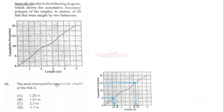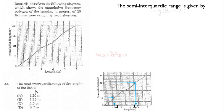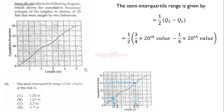Items 43 to 44 refer to the cumulative frequency polygon showing the lengths in meters of 20 fish bought by two fishermen. We need to find the semi-interquartile range, which is the interquartile range divided by two. So we need to find the first quartile and the third quartile, subtract them, then divide by two.